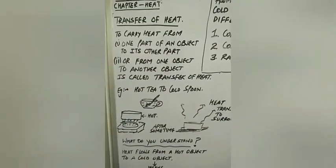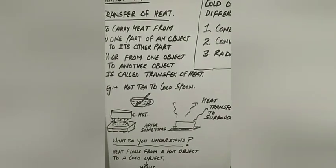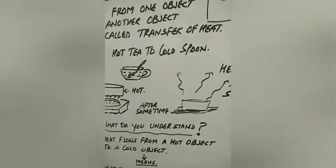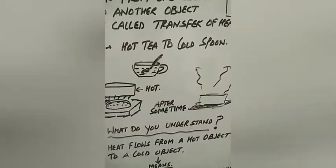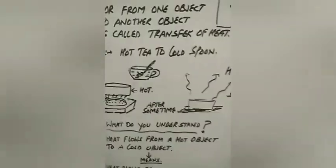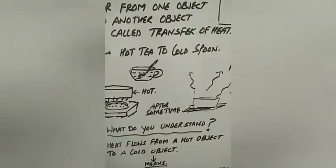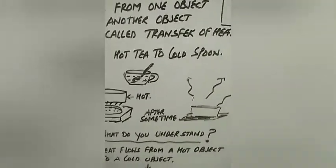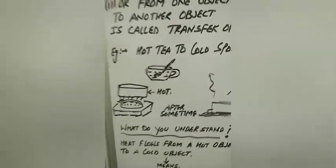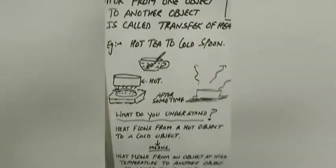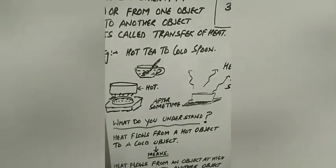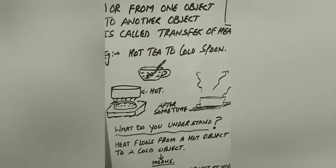For example, consider hot tea and a cold spoon. I have a hot tea cup with a spoon inside. Tea is at higher temperature — because water boils when we make tea, so temperature will be quite high compared to the spoon, which is generally at room temperature. The heat will start transferring from the tea to the spoon.